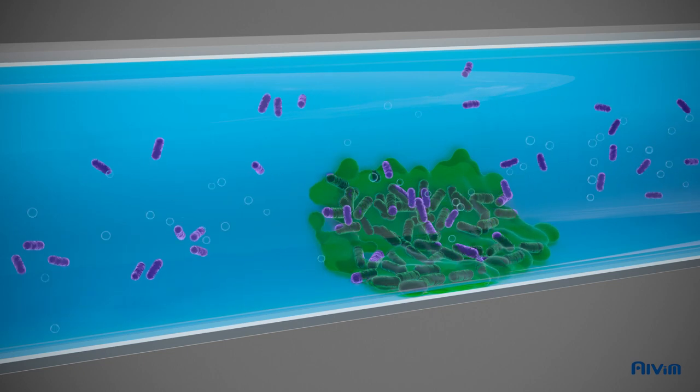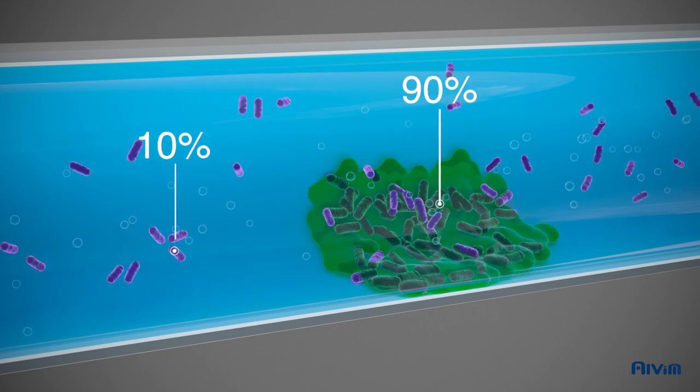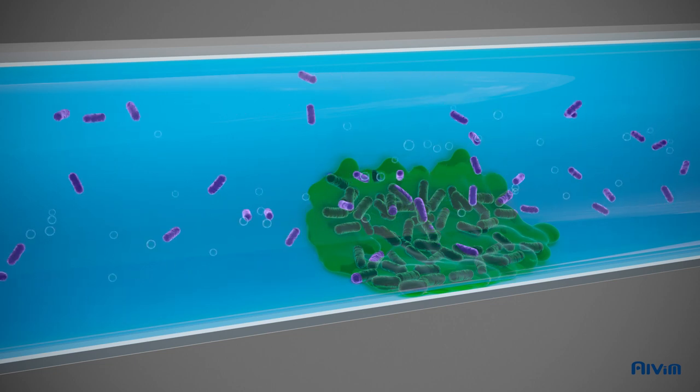Free-floating bacteria represent just 10% of the total number of bacteria in a piping system. Indeed, 90% of microorganisms live in biofilm, not free in the liquid.